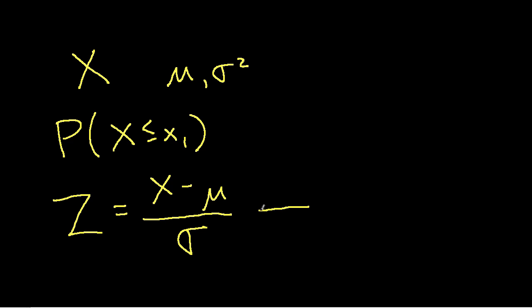And it turns out, and this is the magic, that Z is a normal random variable with a mean of 0 and a variance of 1. And so it's now possible to have one table of the cumulative distribution function of Z and you'll find these tables actually in almost any statistics book.